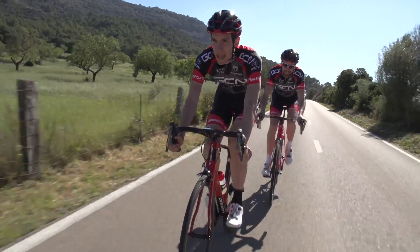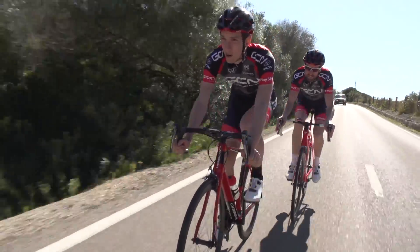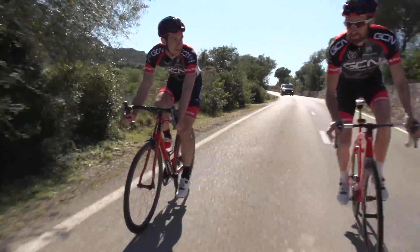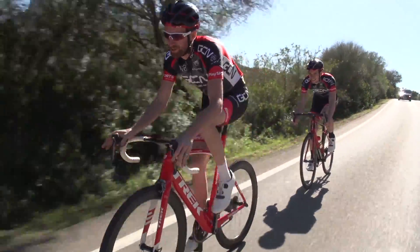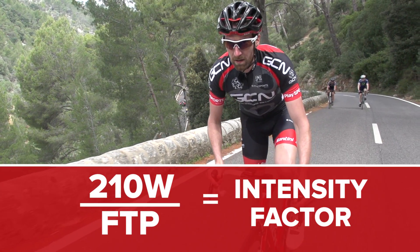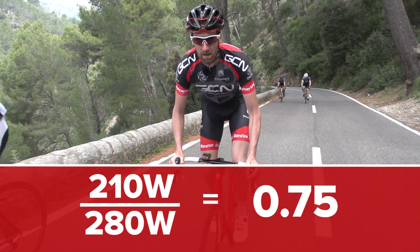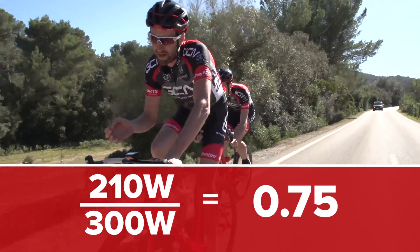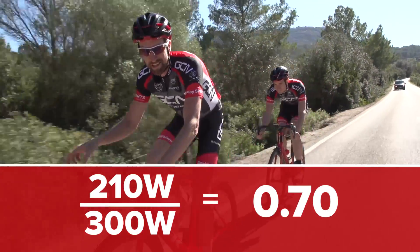For example, if we took a GCN cafe recovery ride and one of us saw an intensity factor of 0.85, we'd know that we hadn't gone easy at all and we'd had a bit of a tear up. IF is actually a really good way of showing what the effects of increased fitness are. If at the start of the season you head out for a long ride at a normalised power of 210 watts whilst your FTP is 280 watts, you'll come out with an IF of 0.75. Then later in the year, once your FTP is up to 300 watts, if you did that exact same ride at 210 watts normalised power, your IF would only be 0.7 — so it was actually easier, meaning you're going to have to go harder to gain more fitness.